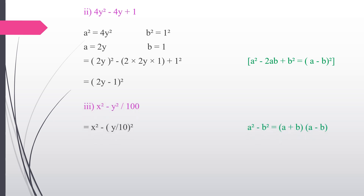Third subdivision: x² − y²/100. We use the identity a² − b² = (a + b)(a − b). We rewrite as x² − (y/10)². Applying the identity: the answer is (x + y/10)(x − y/10).